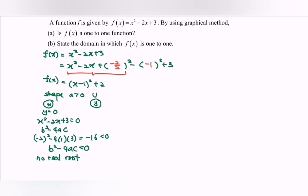Meaning that there's no real root, or we can say no x-intercept. Next, in order to find the y-intercept, x must equal 0. If we substitute, y = 3. So the coordinate will be (0,3).